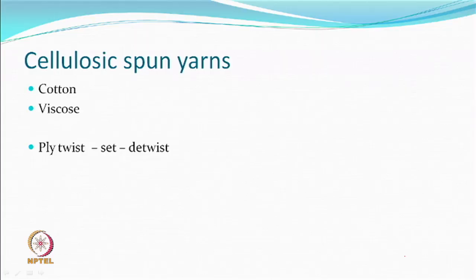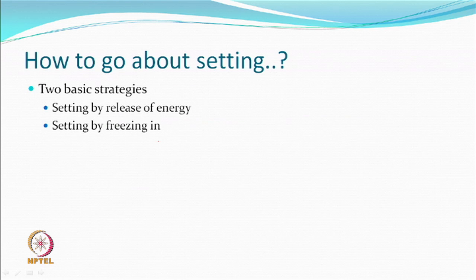There are two basic strategies, and they do not change: you can set by release of energy, or you can set by freezing in. The same things discussed before will be valid here as well. The only thing that may change is which chemical, which solvent, what kind of agent we will use. There was enough interest in textured yarn — the earliest yarns which had the advantage of bulk and also stretch were the sheath-core yarns, in the twenties and thirties, or elastics.